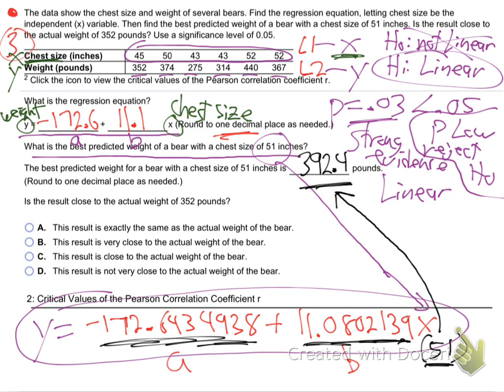So this equation predicts that a bear with a 51-inch chest size — 51 inches around his chest — should weigh 392.4 pounds. This is what we're doing in the whole section: getting these equations that connect two variables, these linear equations. Now, the actual weight of the bear — they actually weighed the bear and it was 352 pounds. How close? That's pretty far — it's 40 pounds off the real weight.